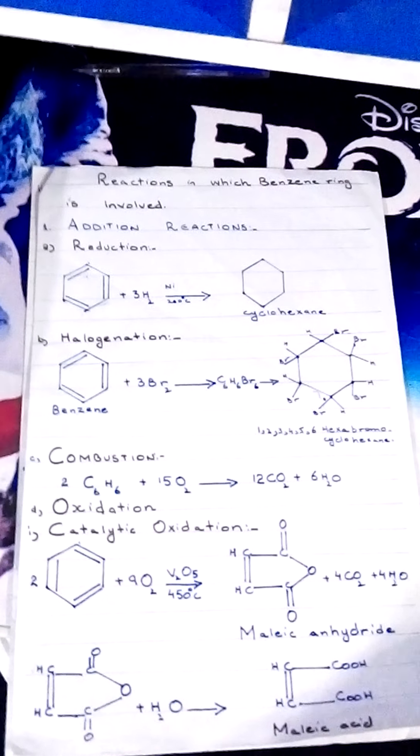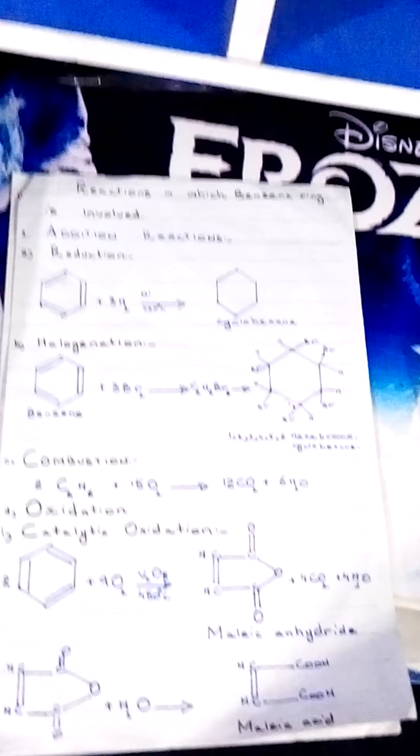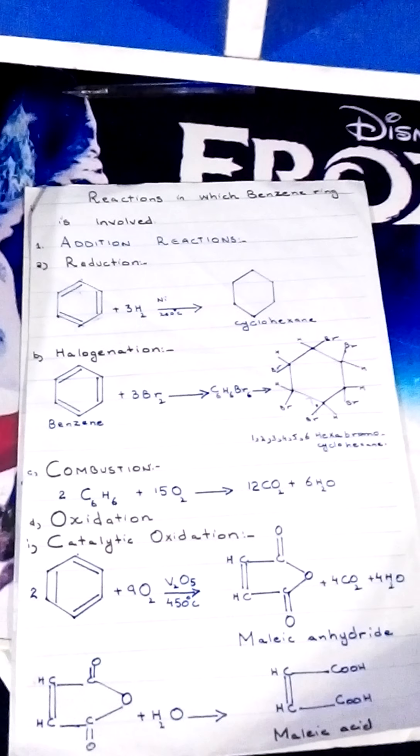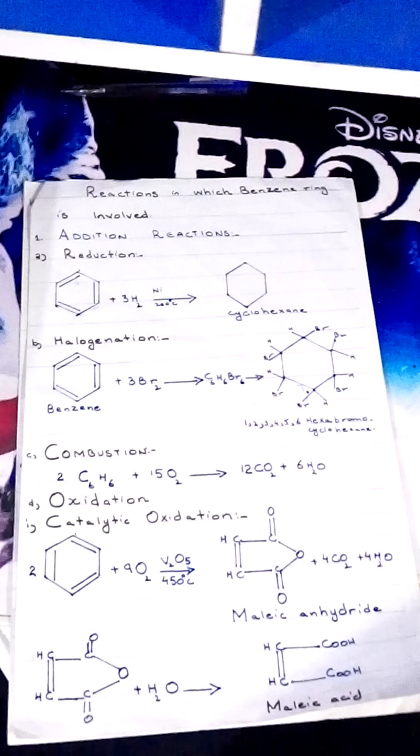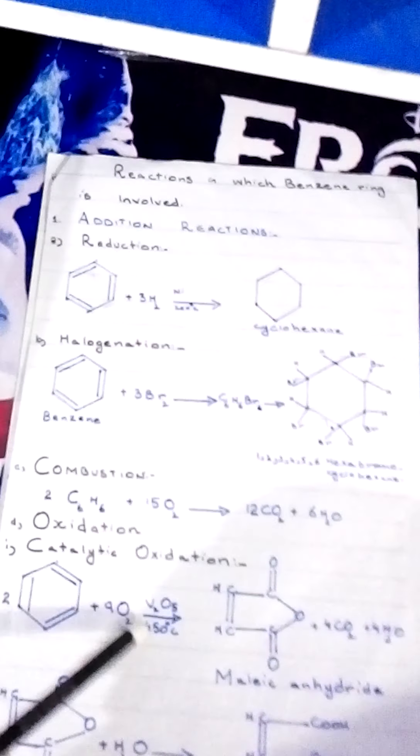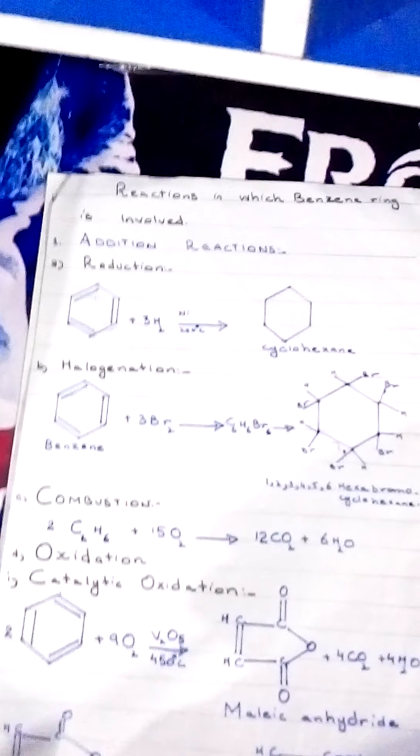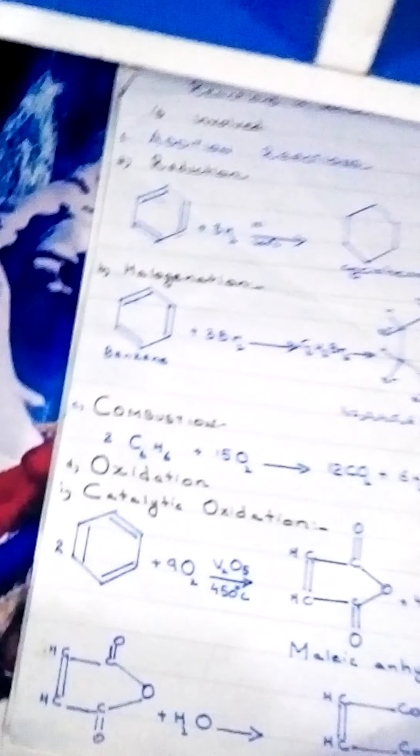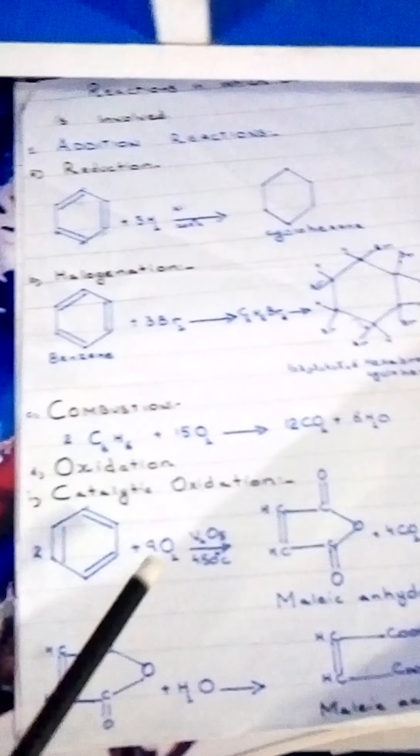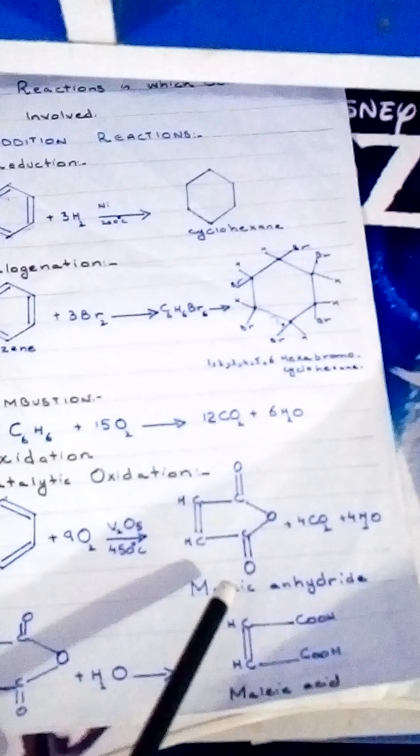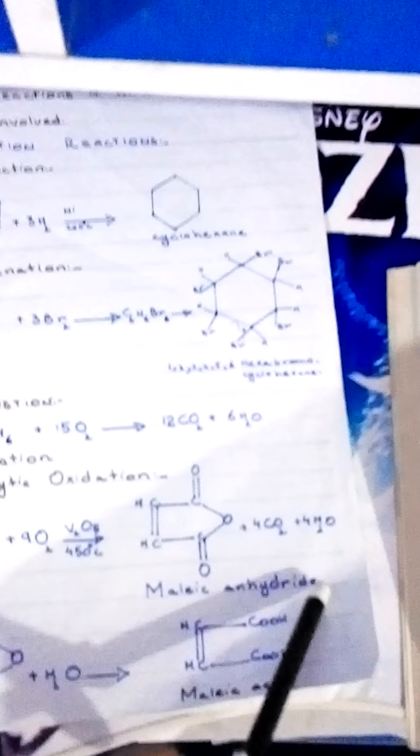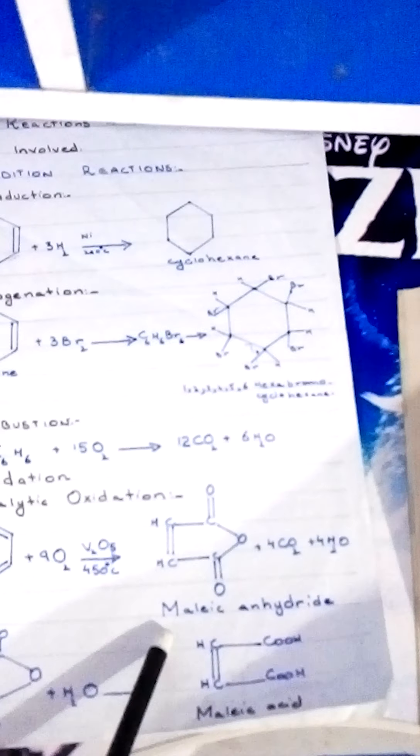Next is oxidation reaction: catalytic oxidation in the presence of oxygen. Oxidation takes place in the presence of a catalyst. The catalyst here is vanadium pentoxide, V2O5, at 450 degrees centigrade. Benzene reacts with oxygen in the presence of V2O5 and gives maleic anhydride plus carbon dioxide plus water. This is the formula of maleic anhydride.